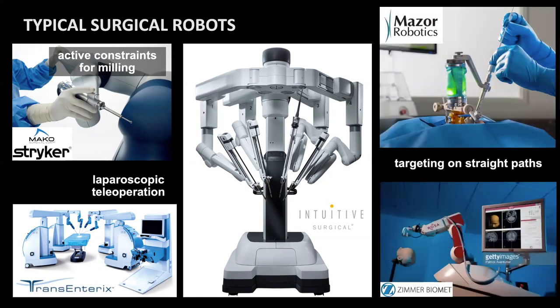Lastly, we have targeting robots — commercialized by Mazor Robotics or by Siemens' Rosa system — which use robots as passive holders for instruments. A little parallel robot helps position a pedicle screw in spinal surgery. The Rosa robot also positions itself based on a predefined target, such that a biopsy needle can be inserted or epilepsy treatment delivered along a straight path. These three surgical robot types represent most of what's out there today.